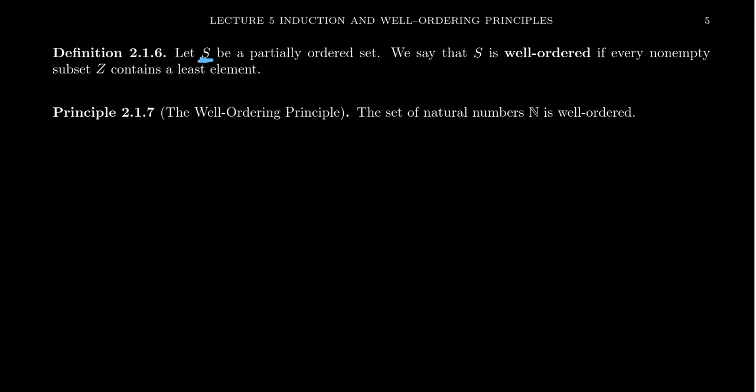Let S be a partially ordered set — we will properly define this later on. Basically, it just means that if we have elements X and Y, we can decide if X is less than or equal to Y. We'll define that more properly later, but we've probably seen something like this before. We say that a set is well-ordered if every non-empty subset contains a least element — there's always a smallest element inside that set.